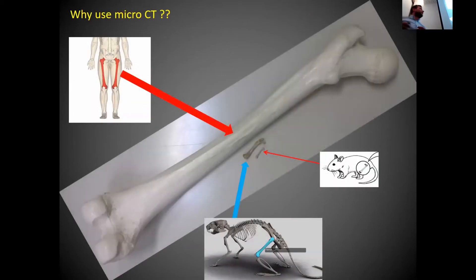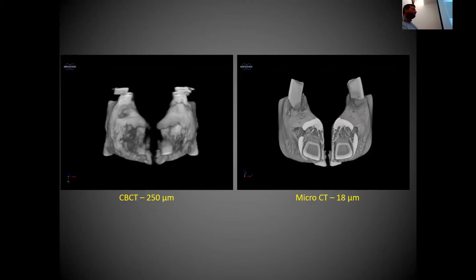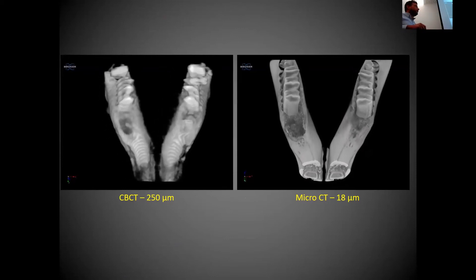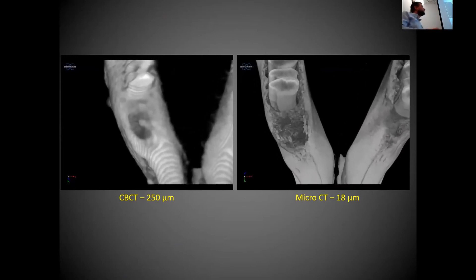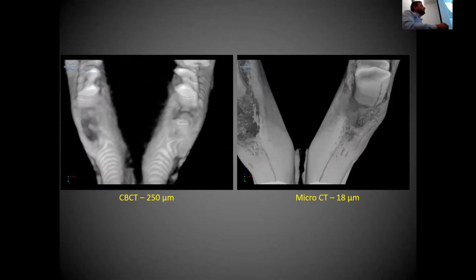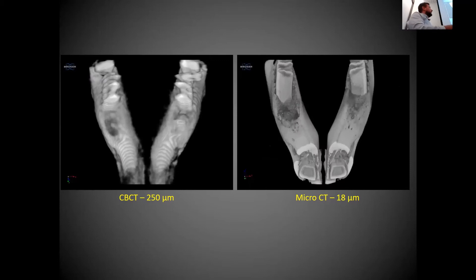So why use micro-CT? Here we have an image of a human femur alongside a mouse — I mostly do pre-clinical imaging, but from an archaeological standpoint you also have smaller samples requiring better resolution. Here we see a rabbit mandibula scanned on clinical CT at 250 micrometers resolution compared to the same sample on micro-CT at 18 micrometers. The level of detail in trabecular bone areas is night and day.